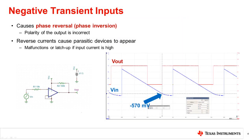A negative input voltage relative to the ground pin may come from these issues in automotive electrical circuits, where it violates the negative common mode voltage range and causes a scenario called phase reversal to occur. Under phase reversal conditions, the negative input current turns on internal parasitic transistors that steal current from other internal nodes, which leads to malfunctions and causes the polarity of the output to become incorrect.